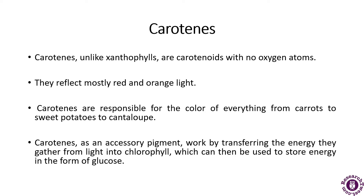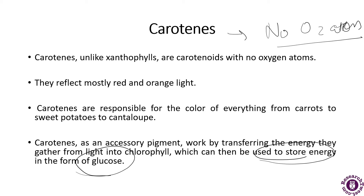The next type is carotenes, which are also carotenoids. Unlike xanthophylls, carotenes are carotenoids with no oxygen atom. They reflect mostly red and orange light, making carotenoids responsible for the color of everything from carrots to sweet potatoes. Carotenes are an accessory pigment that work by transferring the energy gathered from light into chlorophyll, which can then store energy in the form of glucose.